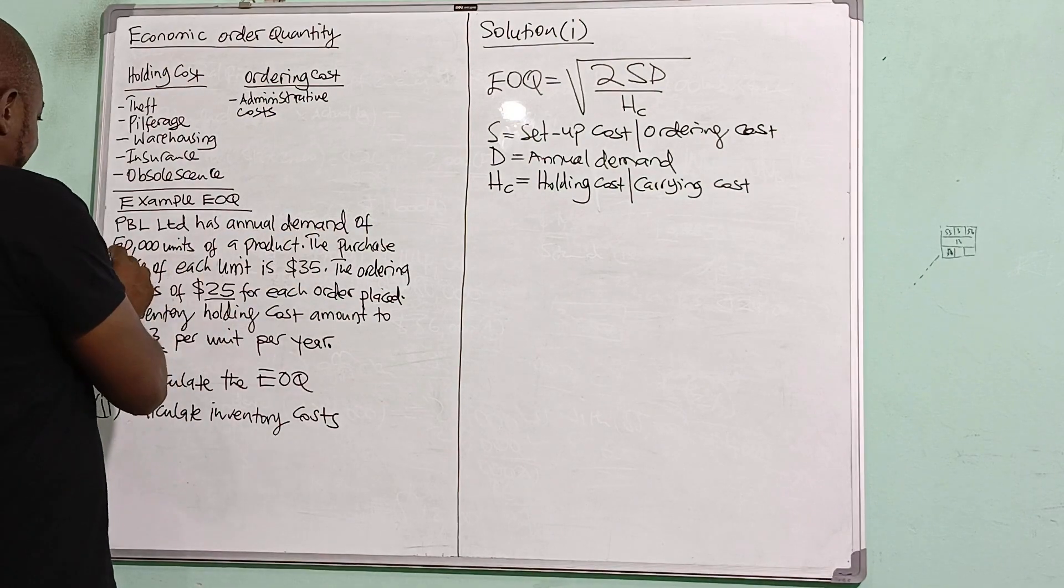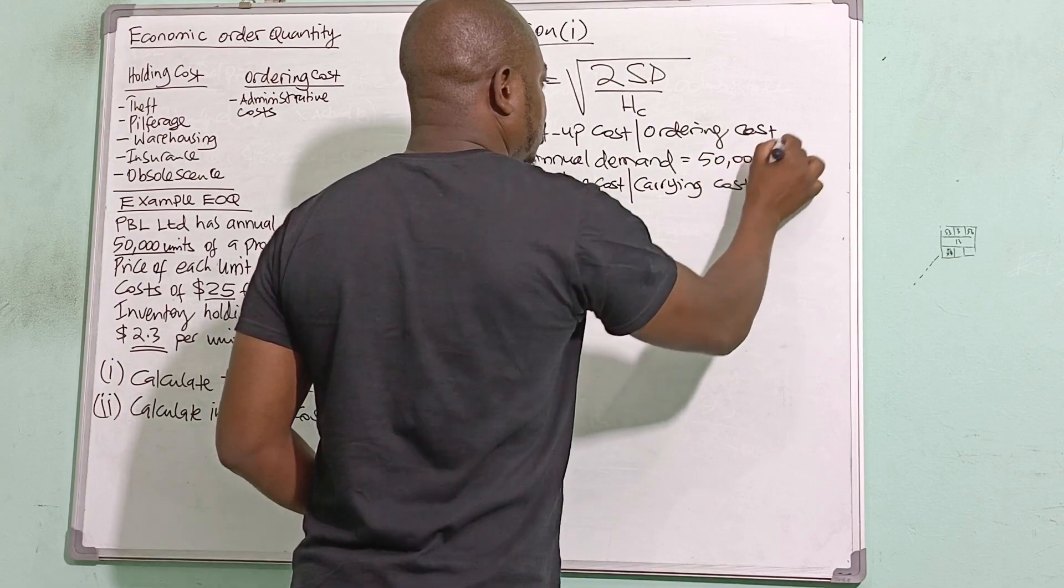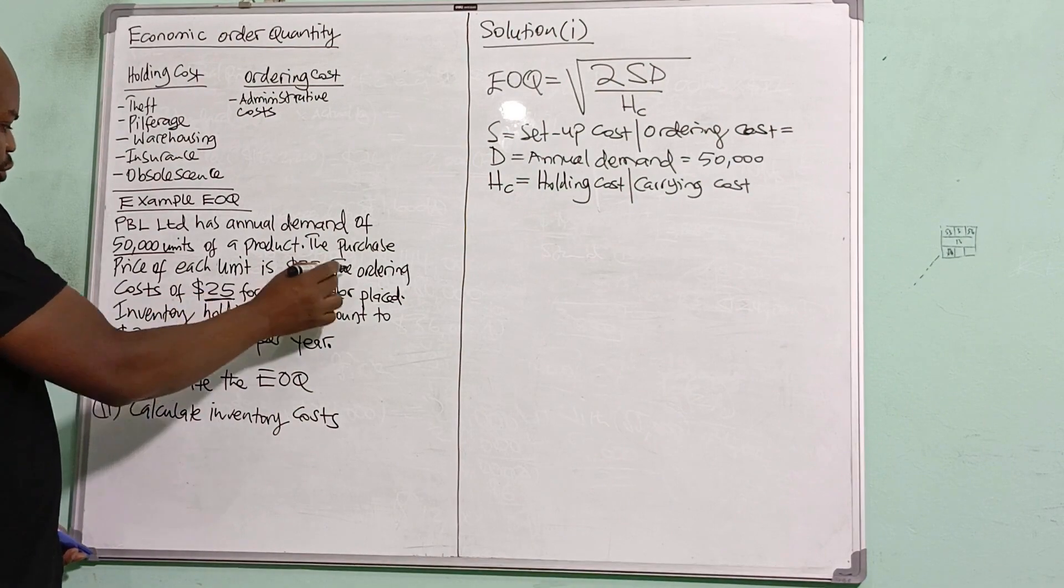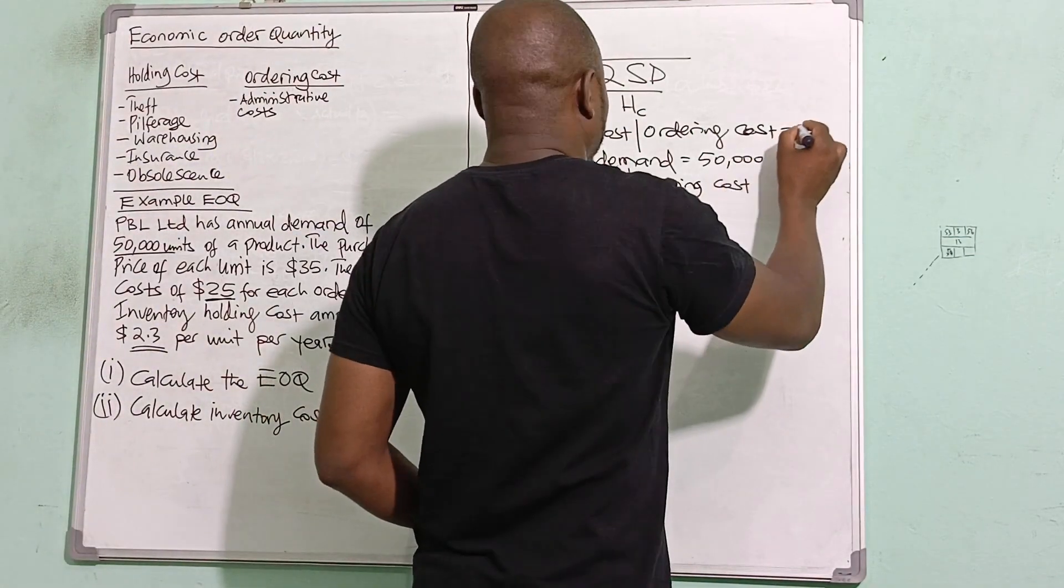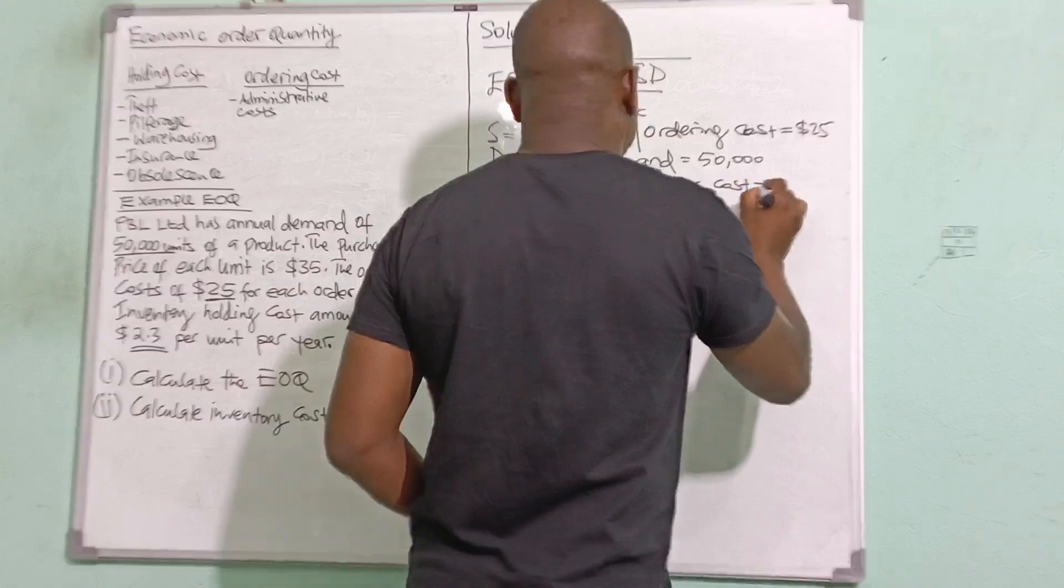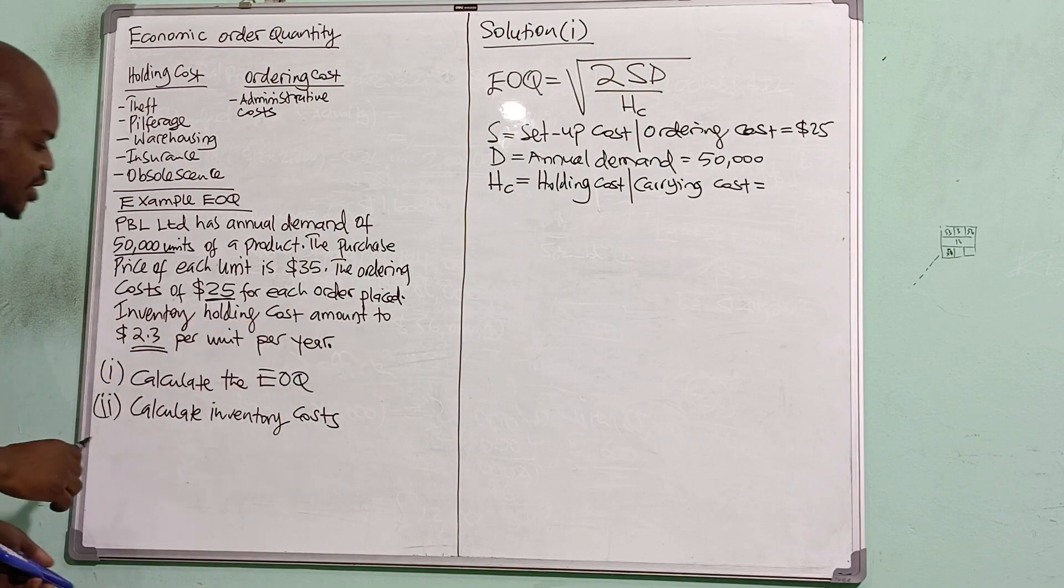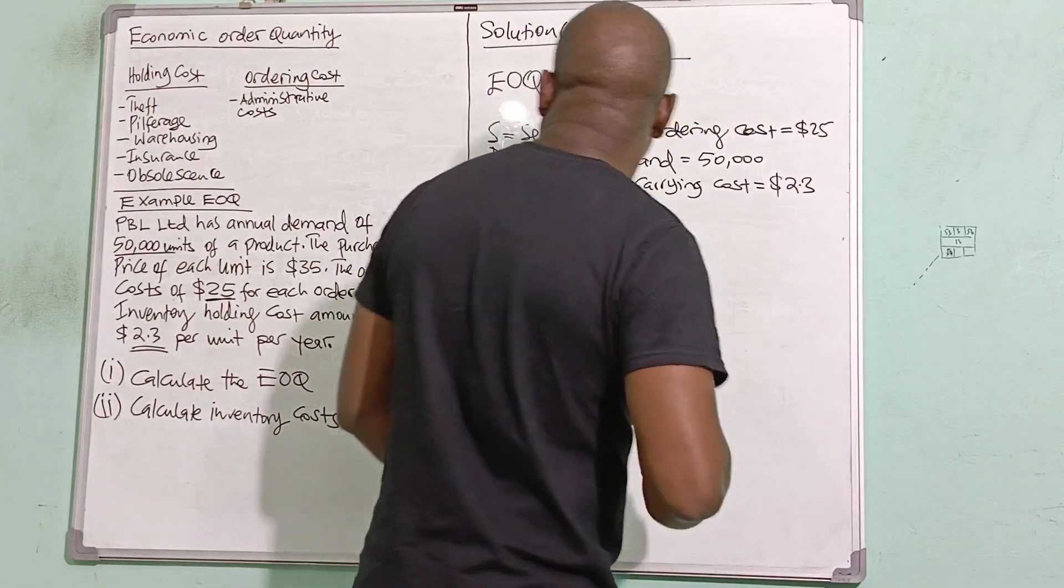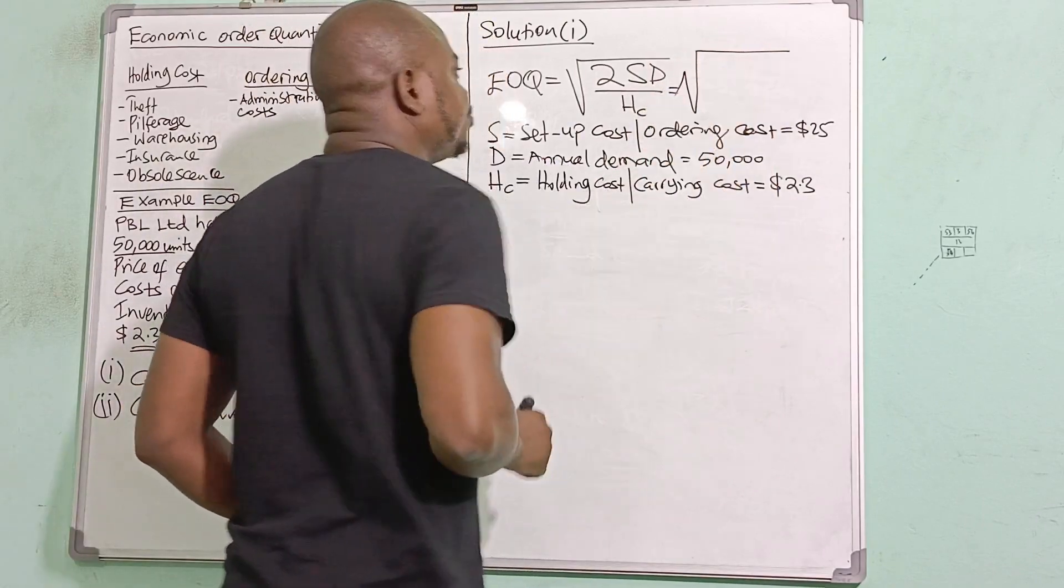So I have the annual demand, which is 50,000 units. And then what is my setup cost? The cost of placing an order—the ordering cost of $25 for each order placed. And then I have the holding cost, which amounts to $2.3 per unit per year. Now, with that in mind, I can now calculate my EOQ.